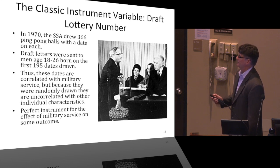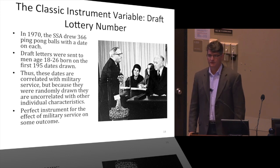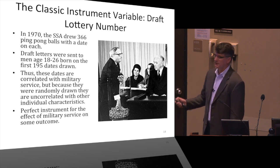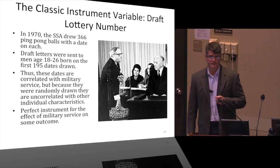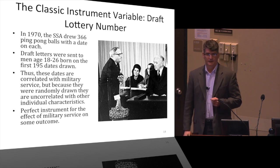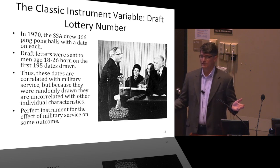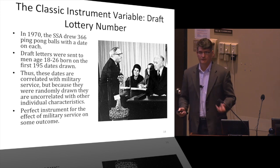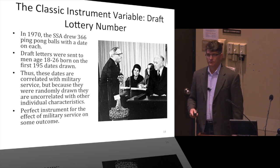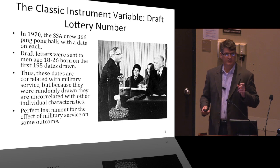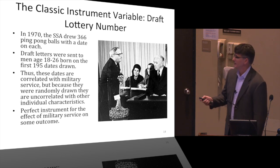The classic instrumental variable is the Vietnam draft lottery number. Starting in 1970, they put dates on ping pong balls and drew them randomly. The first 195 dates drawn meant those born on those dates were drafted. This is a totally random thing correlated with whether you went into the military — a perfect instrument for studying whether veterans are adequately compensated for their service.